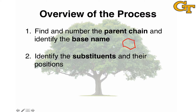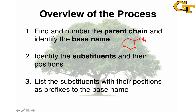Step two is to identify the substituents and their positions, and once we've got the numbering scheme down, this is identical to what we did for the alkanes and other classes of organic compounds. We look at the structure of the substituent to determine its name, and we prefix the name of the substituent with the number that illustrates its location. Step three is to list the substituents with their positions as prefixes to the base name, and this is identical to the process we've seen in other examples for cycloalkanes.